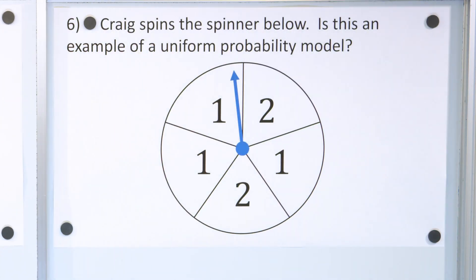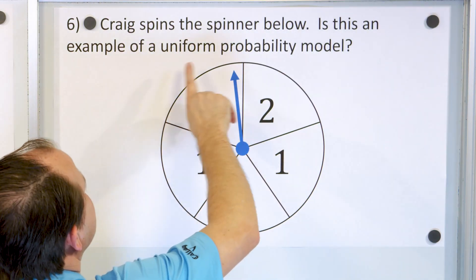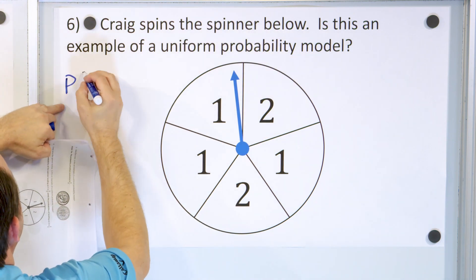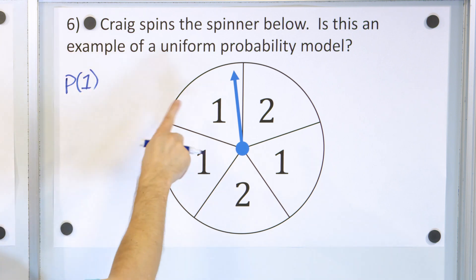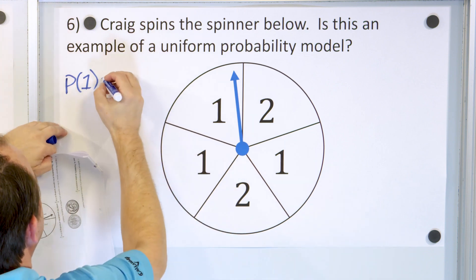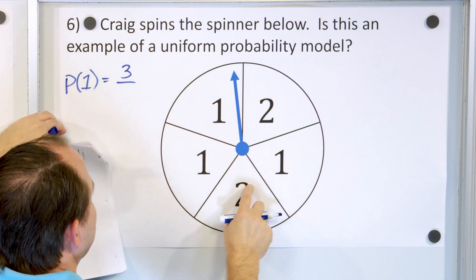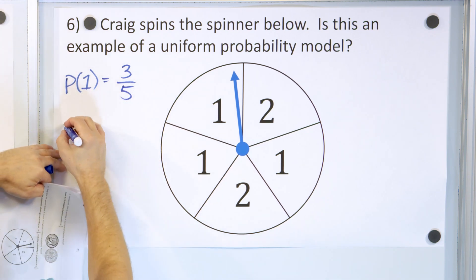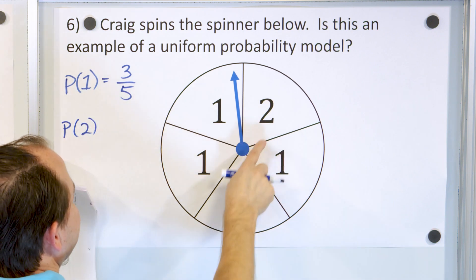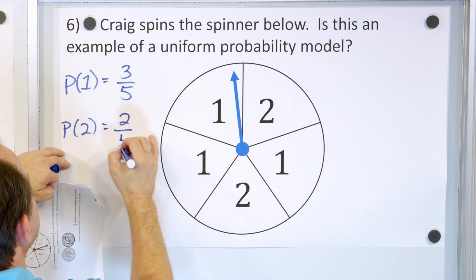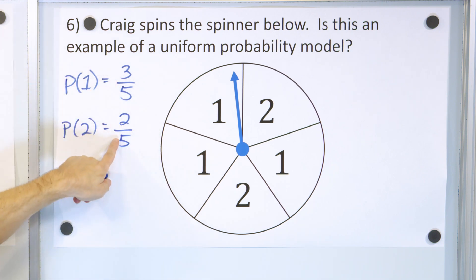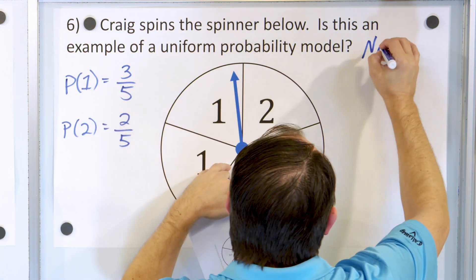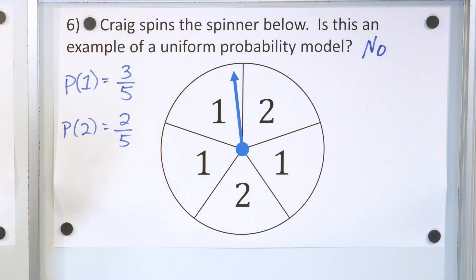Let's take a look at problem number six. Craig spins the spinner below. Is this an example of a uniform probability model? The probability of landing on a position with the number one is three possible outcomes out of five total, so three-fifths. The probability of landing on a two is only two outcomes out of five, so two-fifths. Since three-fifths does not equal two-fifths, is this a uniform probability model? No, it is not — it is a non-uniform probability model.